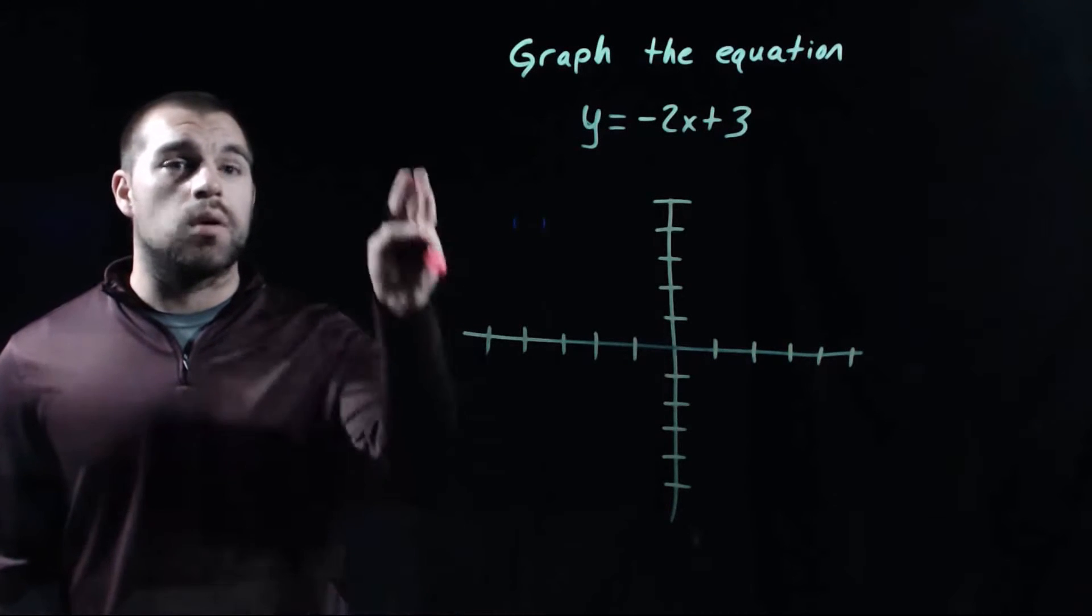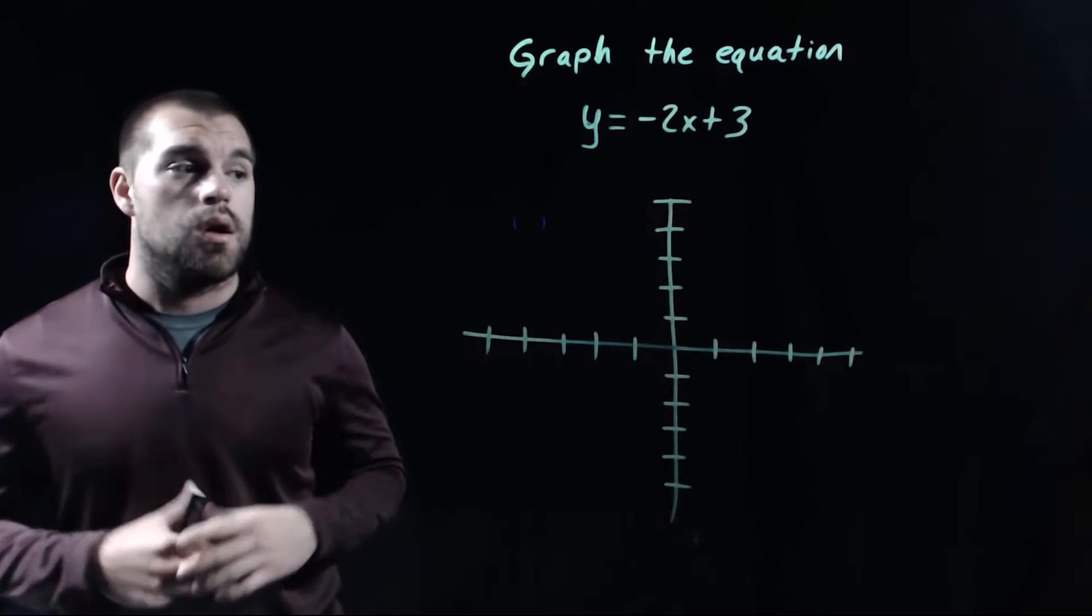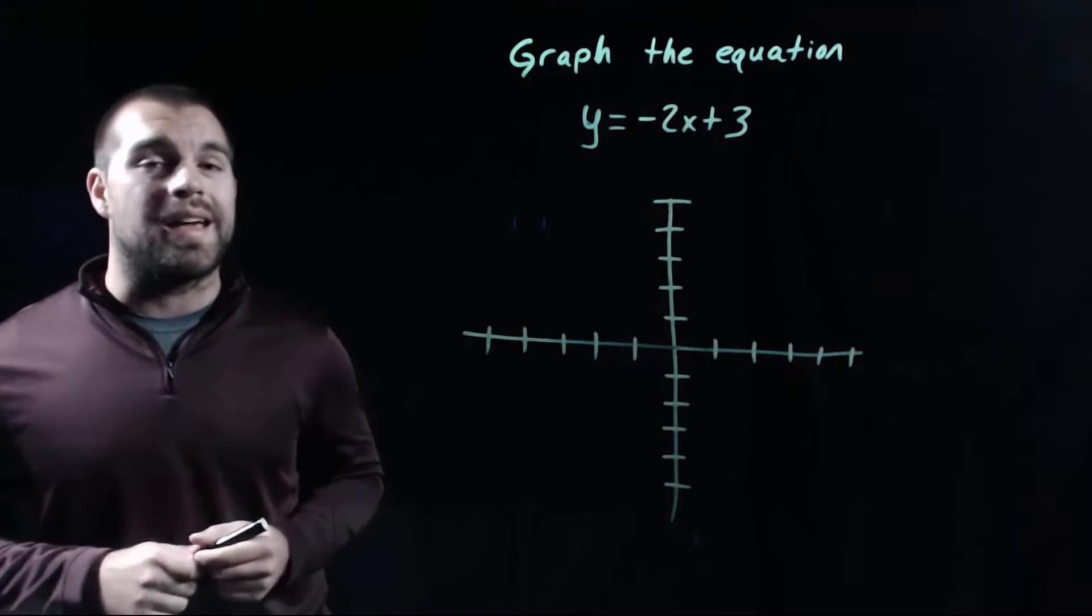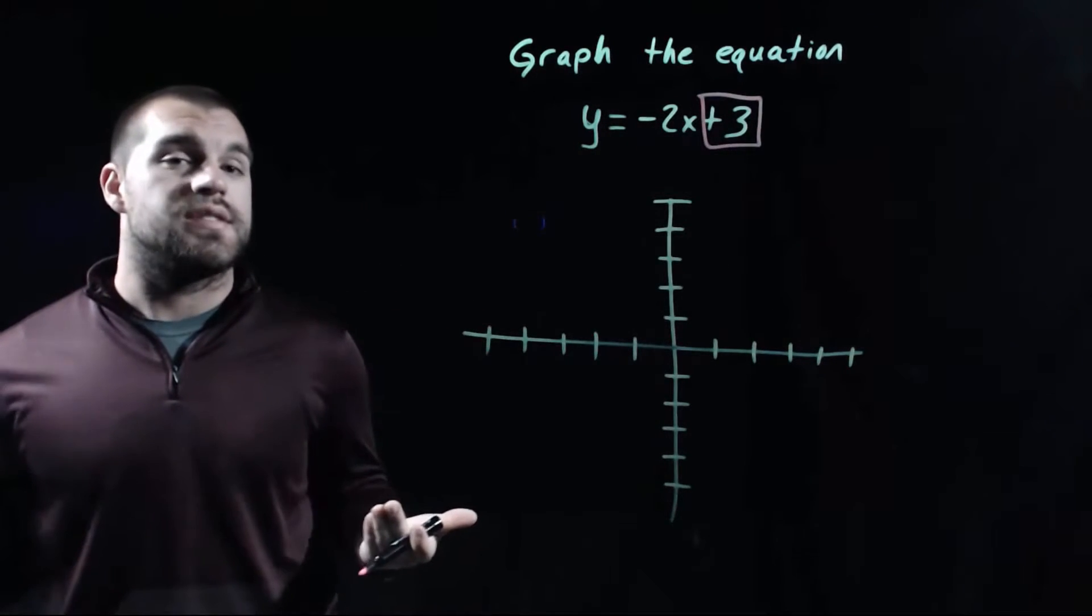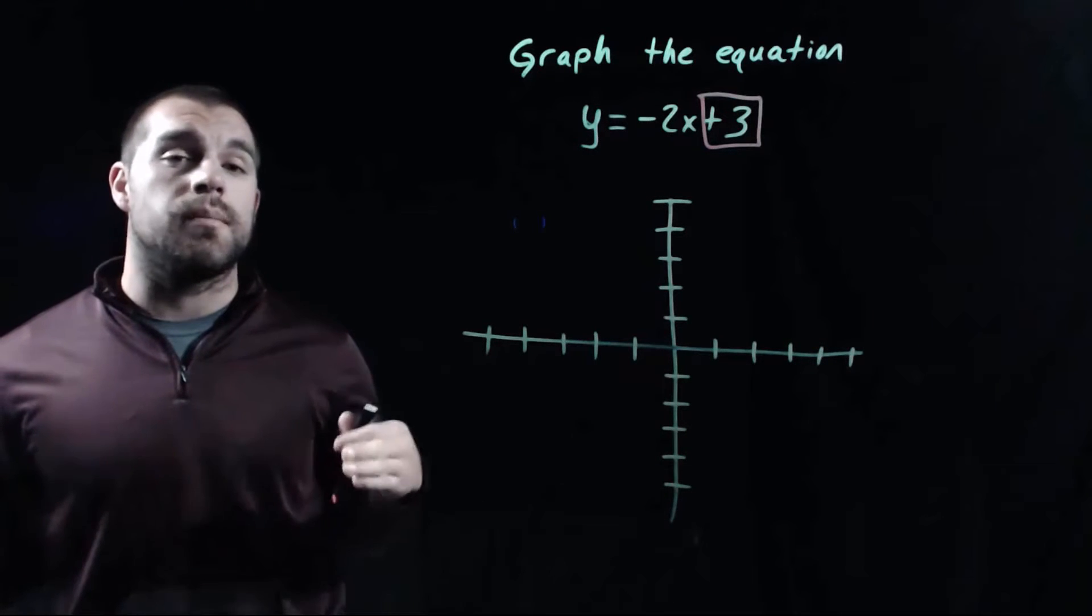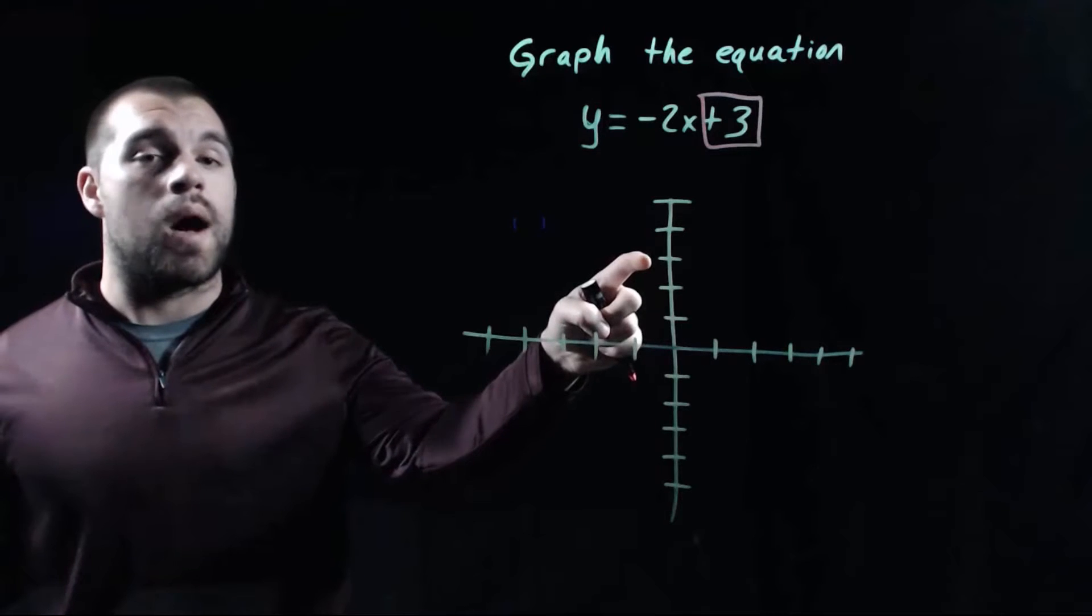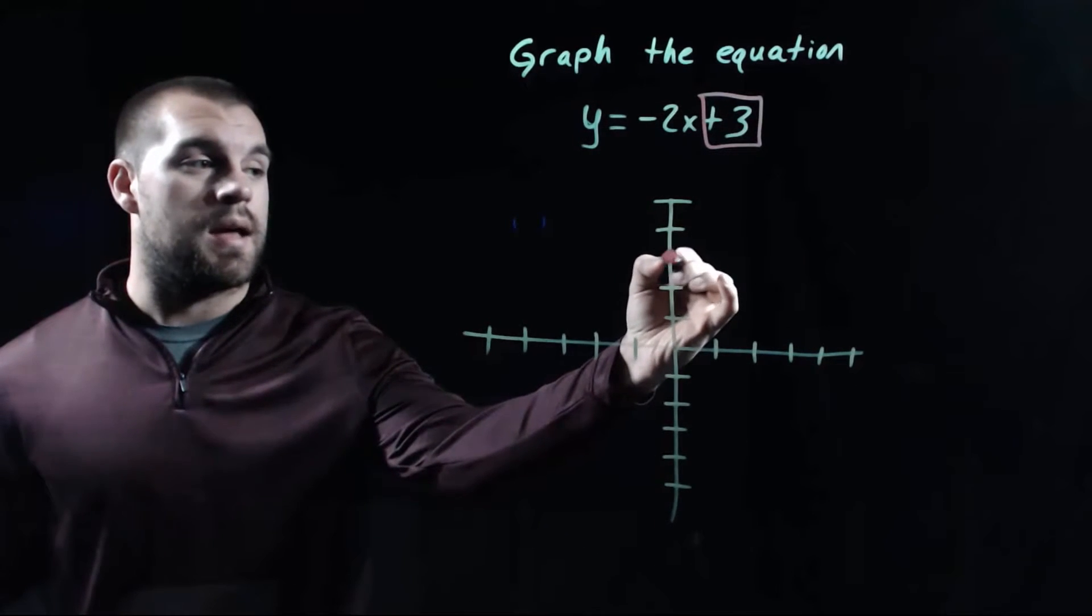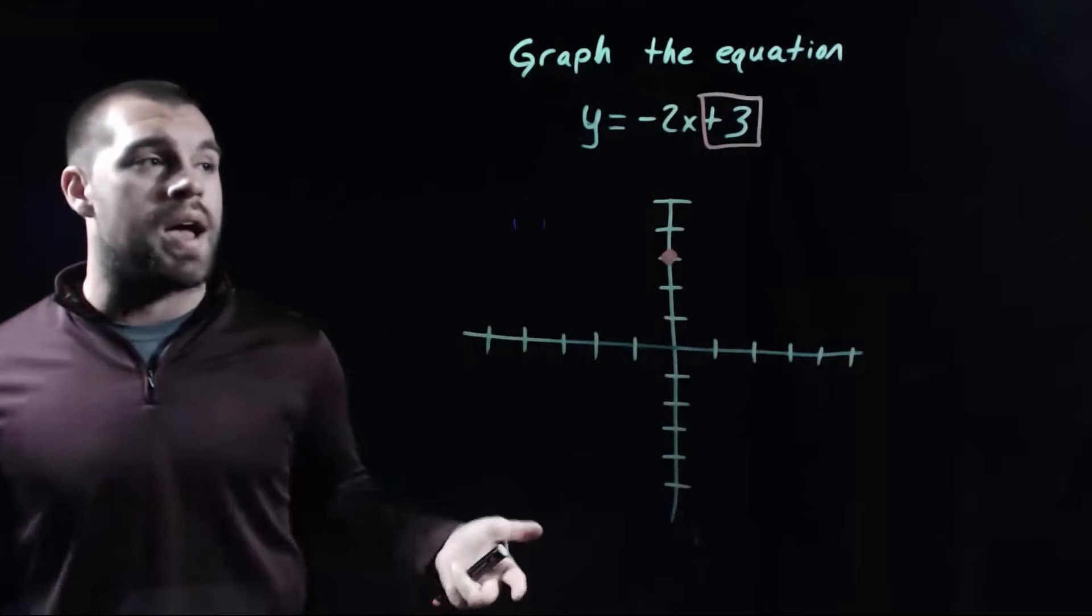Taking a look at this example, we're asked to graph out the equation y equals negative 2x plus 3. In order to graph this out, the first thing we're going to look at is that y-intercept number on the end. This equation is telling us that our y-intercept is going to be at 3. So what that means is we can count up on the y-axis three spaces and put a dot at that point because this is where our graph is going to cross through that y-axis at 3.